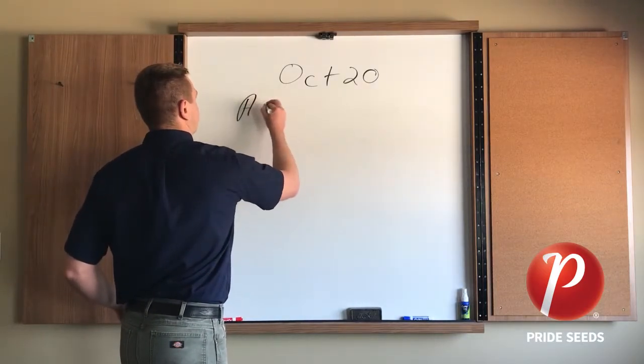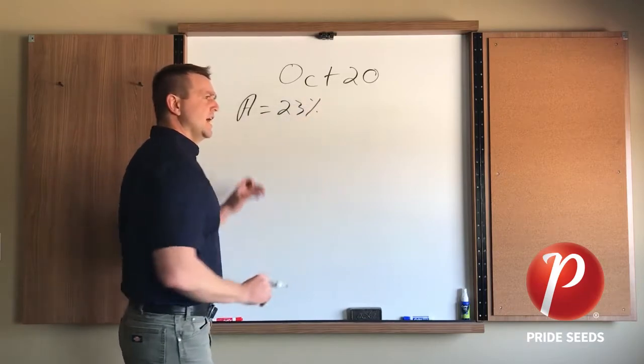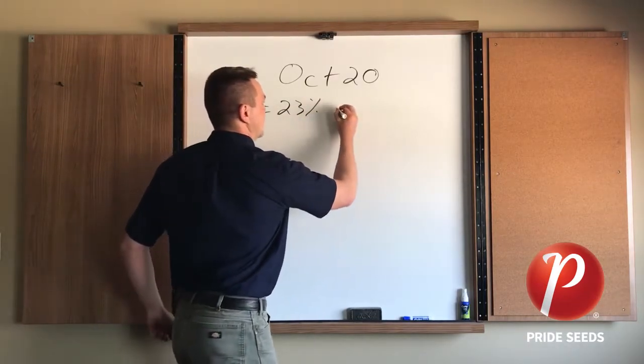So hybrid A, it comes off at 23% and this known hybrid is listed as a 100 day corn.